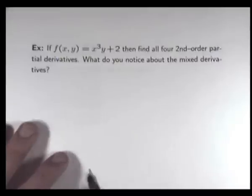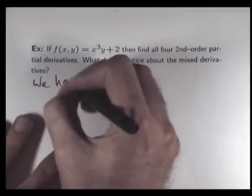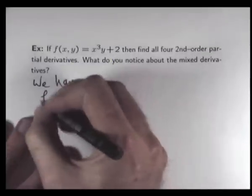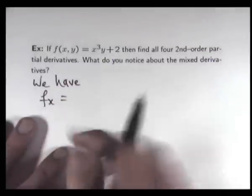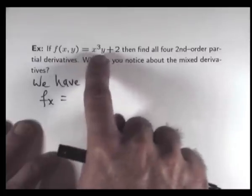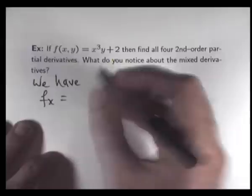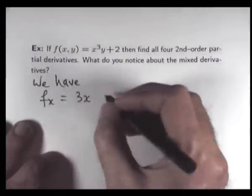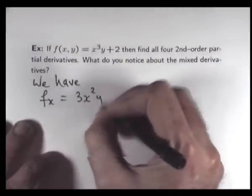So to calculate the second-order derivatives, the first thing we do is calculate the first order. So f sub x is going to be, remember, y is a constant, differentiate normally with respect to x.